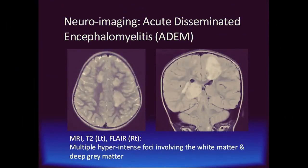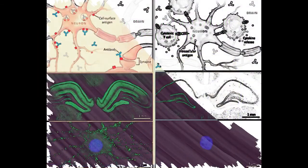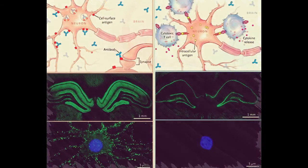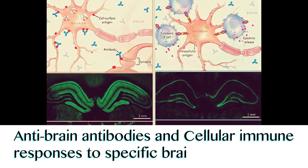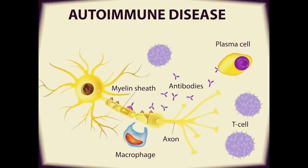MRI typically shows multiple areas of abnormality in the white matter of the brain that can be rather characteristic. The association of the disease with previous infection or immunization suggests an immunological process. Detailed lab studies involving measurement of anti-brain antibodies and cellular immune responses to specific brain antigens suggest that these patients have developed an allergic response against their own brain constituents — an autoimmune response.